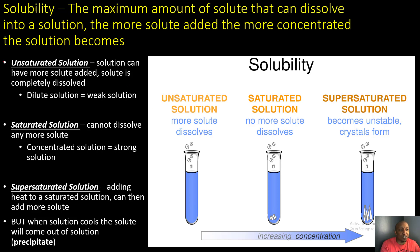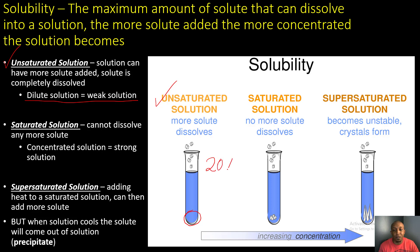Let's start with unsaturated solutions. In an unsaturated solution, the solute is completely dissolved, which means this is a dilute or weak solution. If you look at the very bottom, there is no more solute left. In this solution we have a 20% solute to 80% solvent ratio, meaning we have a lot more solvent than solute.